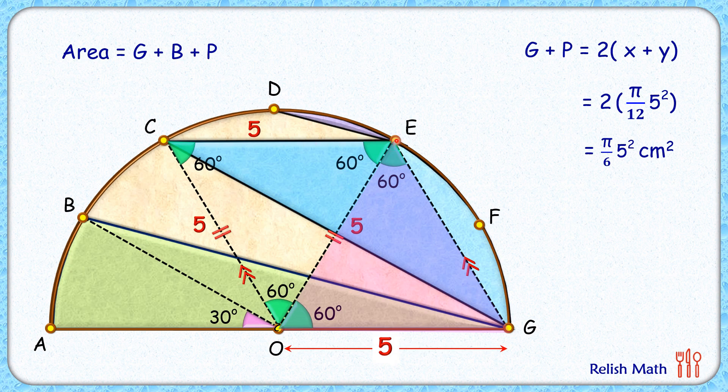Or this blue area which we had to find, CEFG, this area will be the same as the area of this sector OEFG. The area of this sector we know is nothing but 60 upon 360 into π r squared.